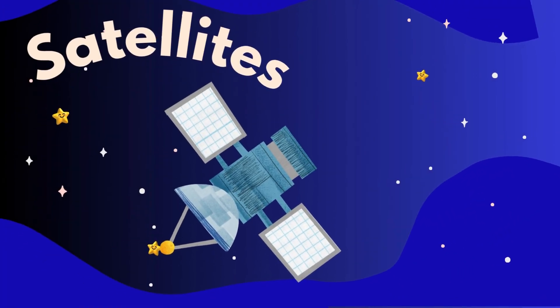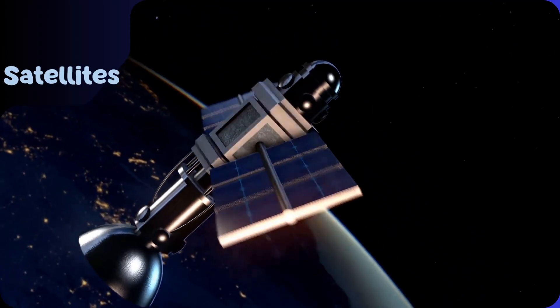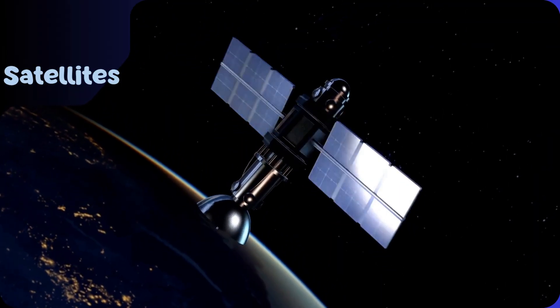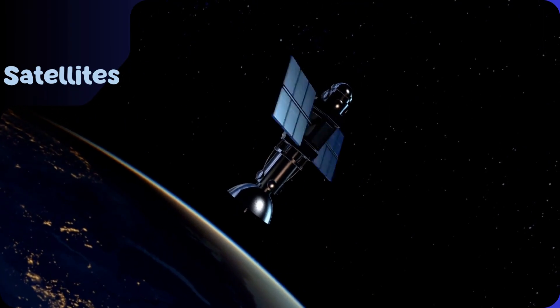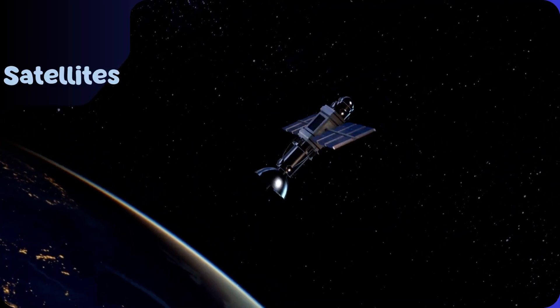Look at the spinning object. It's a satellite. Satellites help us watch TV, use GPS and study earth from space. Some satellites help scientists learn about weather and planets far away.